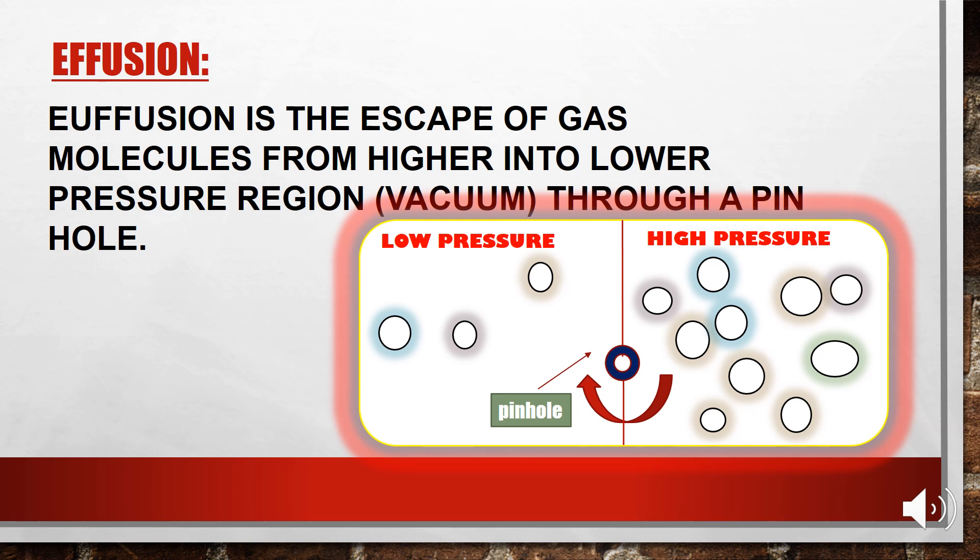So what is effusion? As you can see in the diagram, there is a container with two portions: a low pressure region and a high pressure region. In the case of effusion, the gas molecules move one by one through a pinhole from the high pressure region to the low pressure region. This effusion is a one-way traffic of molecules. By definition, effusion is the escape of gas molecules from a higher to a lower pressure region through a pinhole.